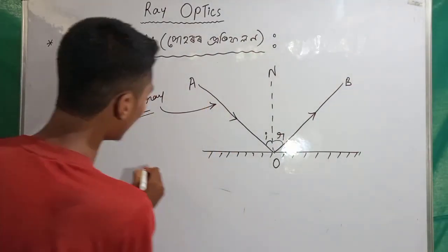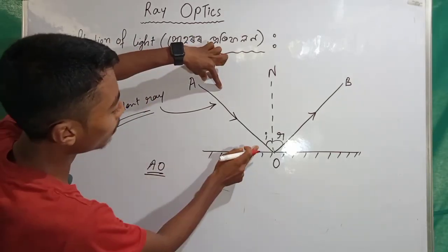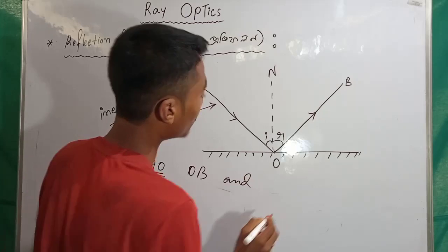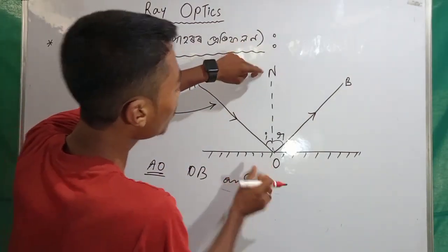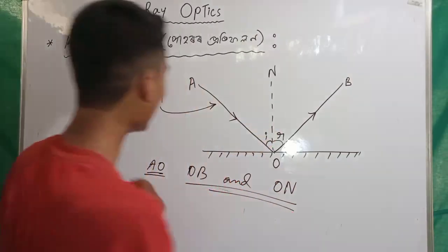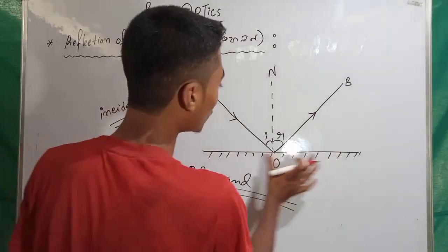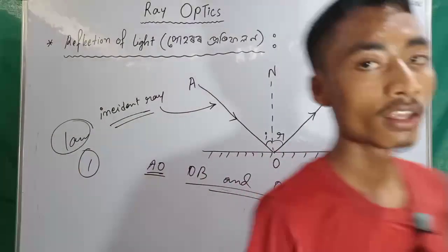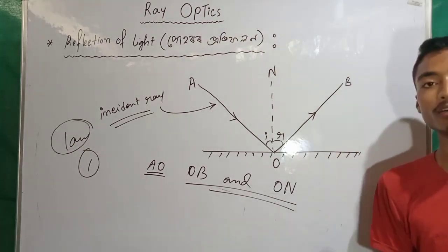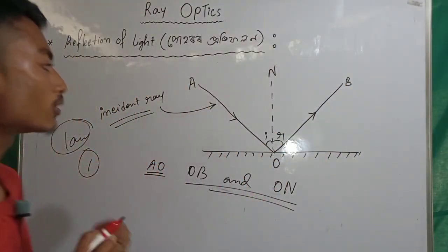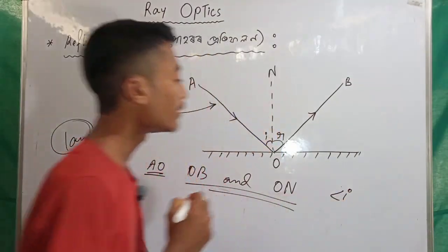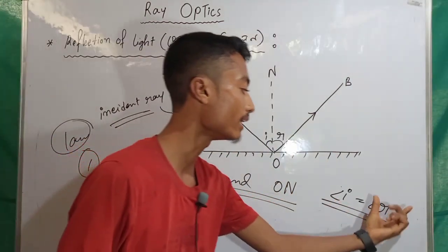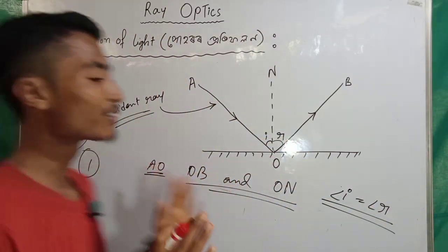The incident ray (Apotitarosmi) is AO. The reflected ray (Protifolitarosmi) is OB. ON is the normal. This gives us the first law. The first rule: angle I equals angle R. This is the first law of reflection.